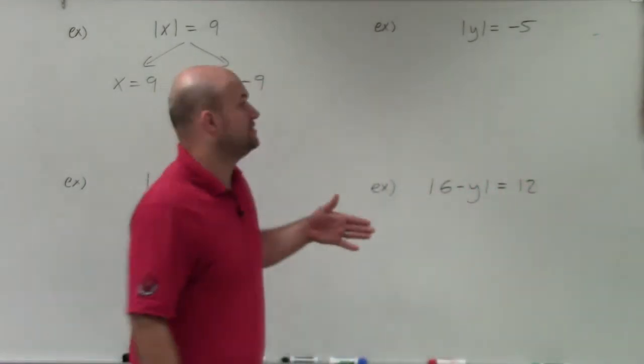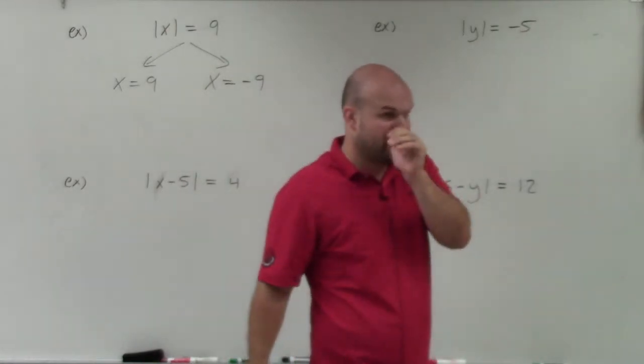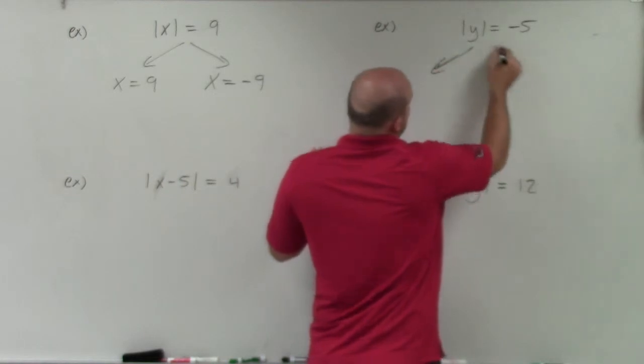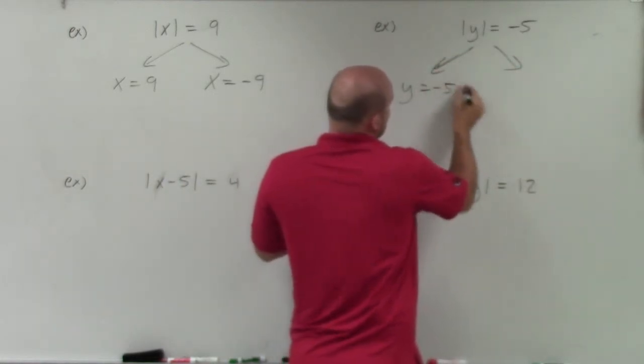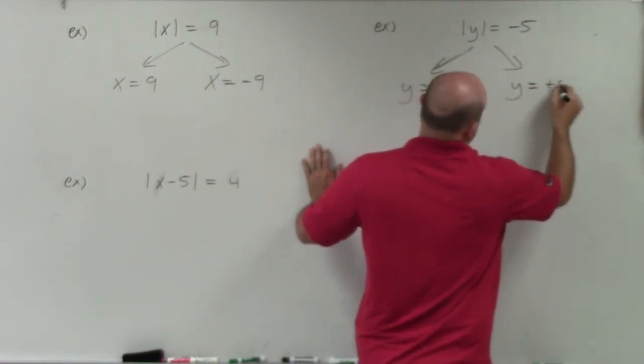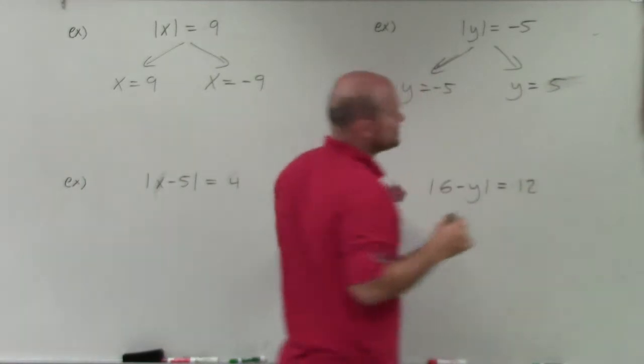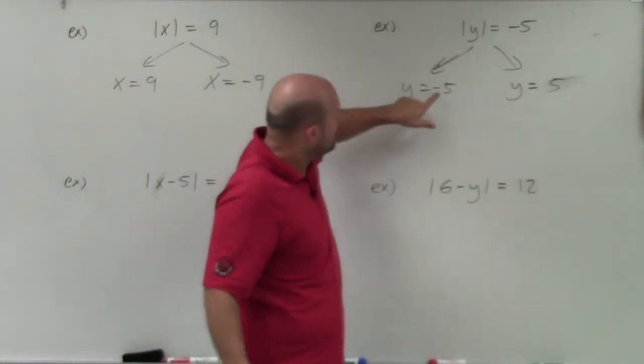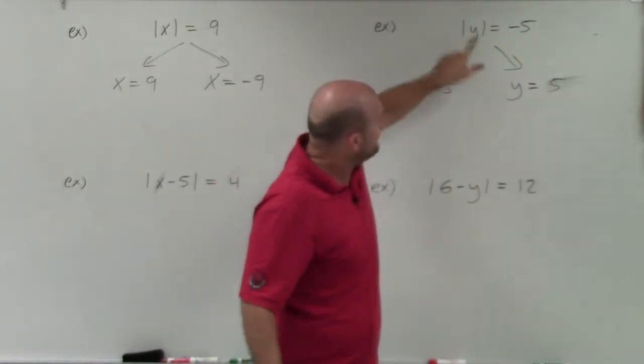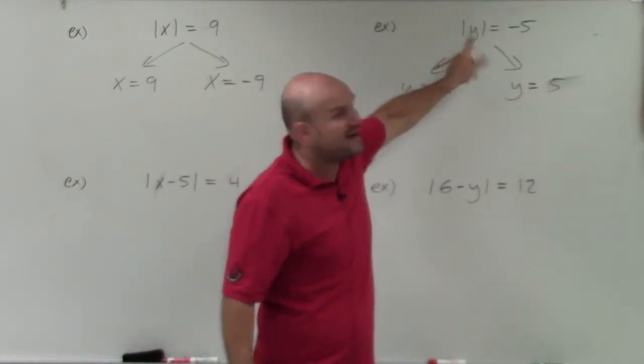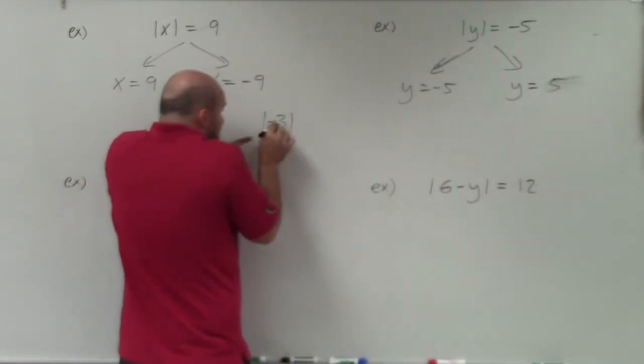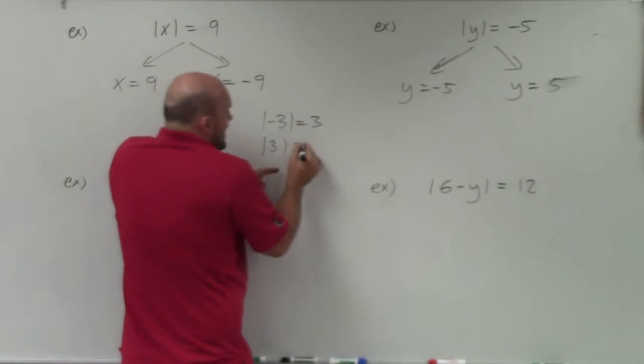But then what happens if you have the absolute value of y is equal to negative 5? Now, let's just go and even think about this. Let's break it apart. y is equal to negative 5 and y is equal to positive 5, or just 5. Now, if you go and check your solutions with this, the absolute value of negative 5 is equal to positive 5. It's not equal to negative 5. The absolute value of 5, if you plug 5 in for y, the absolute value of 5 is 5. Right? Absolute value of negative 3 is 3. Absolute value of positive 3 is 3.